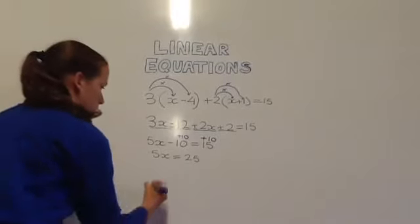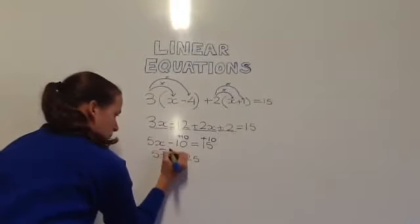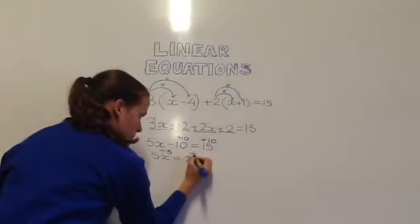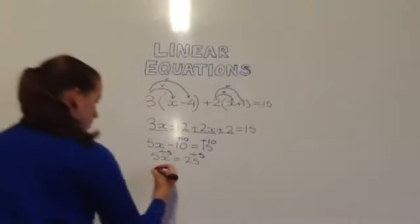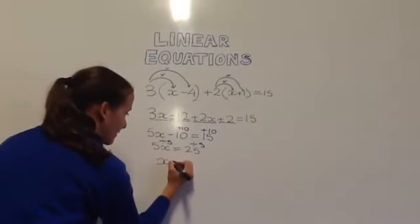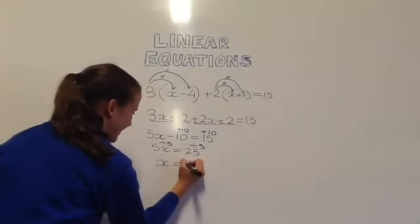And finally to get rid of the 5 you divide both sides by 5. This leaves you with x equals 5.